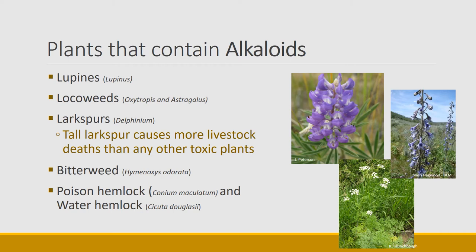Tall larkspur can be quite deadly — if animals eat those plants, they can die quite quickly. Their nervous system just takes over and they can't breathe or circulate blood, so they die. Tall larkspur also has big leafy leaves, so animals are attracted to it. Other alkaloid plants include bitterweeds in the southwest, which can cause death, and poison hemlock or water hemlock — both very deadly, causing significant deaths when animals eat them and their system shuts down.